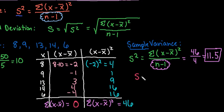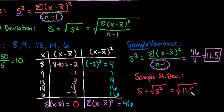To find the sample standard deviation, we would just take the square root of the variance. The sample standard deviation is always found by taking the square root of the variance. For this, we would take the square root of 11.5, which gives us approximately 3.3912. So on average, each of these deviations deviates from the mean by 3.3912 units.